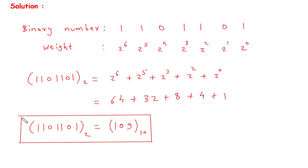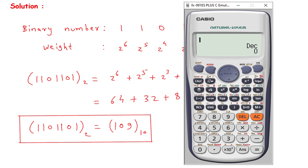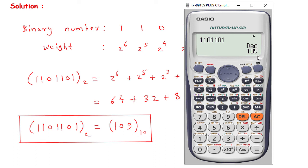We can also verify this answer in the calculator. So mode then 4 — now it is in decimal. We want it in binary, so select binary. Now we will write this number 1101101, and convert to decimal — it is 109. Hence our answer is correct.